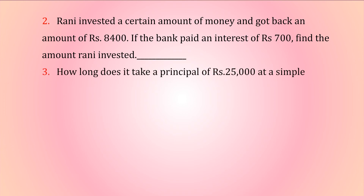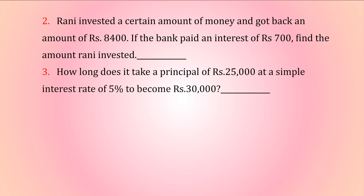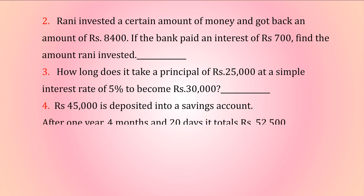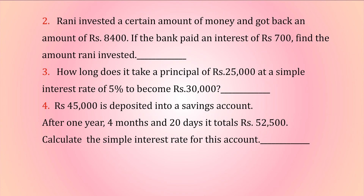How long does it take a principal of ₹25,000 at a simple interest rate of 5% to become ₹30,000? ₹45,000 is deposited into a savings account; after 1 year, 4 months, and 20 days it totals ₹52,500. Calculate the simple interest rate for this account.